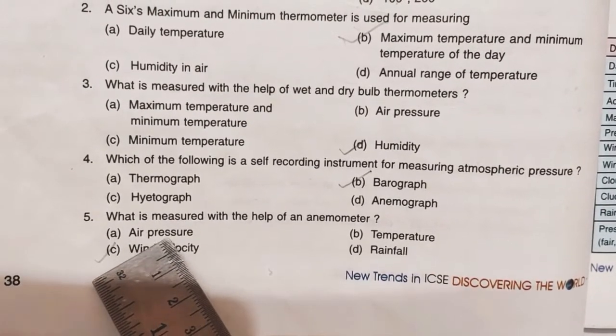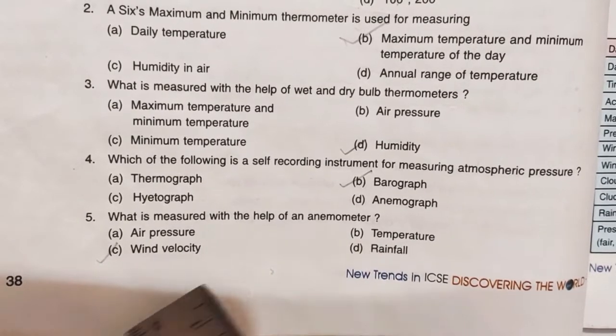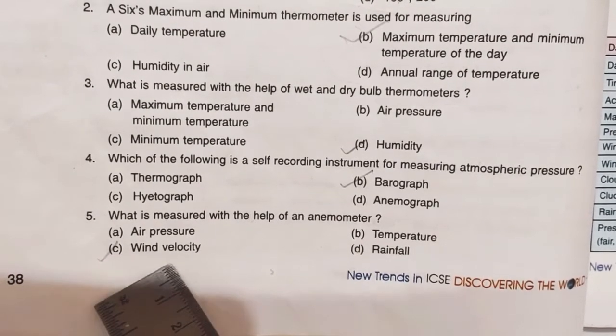Fifth question: what is measured with the help of an anemometer? C answer is correct: wind velocity.